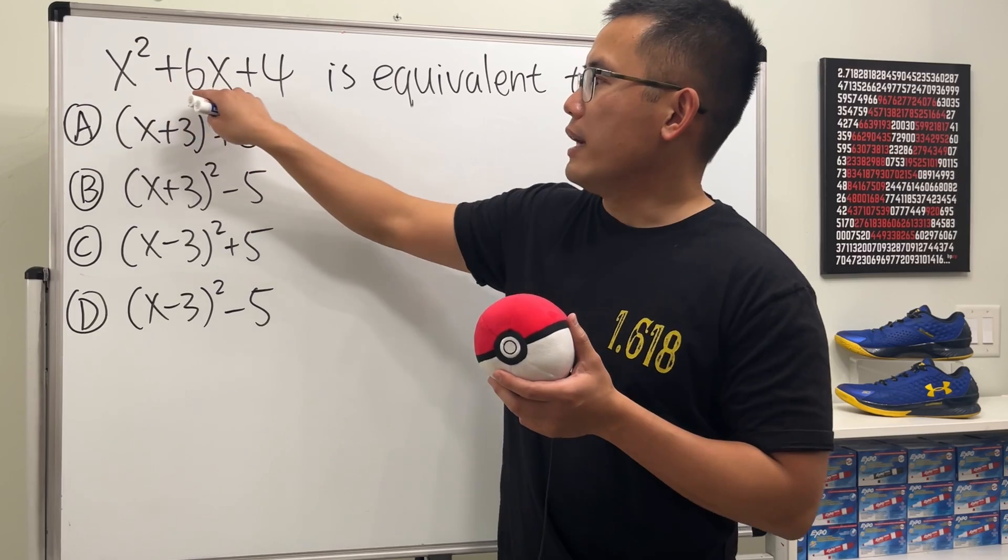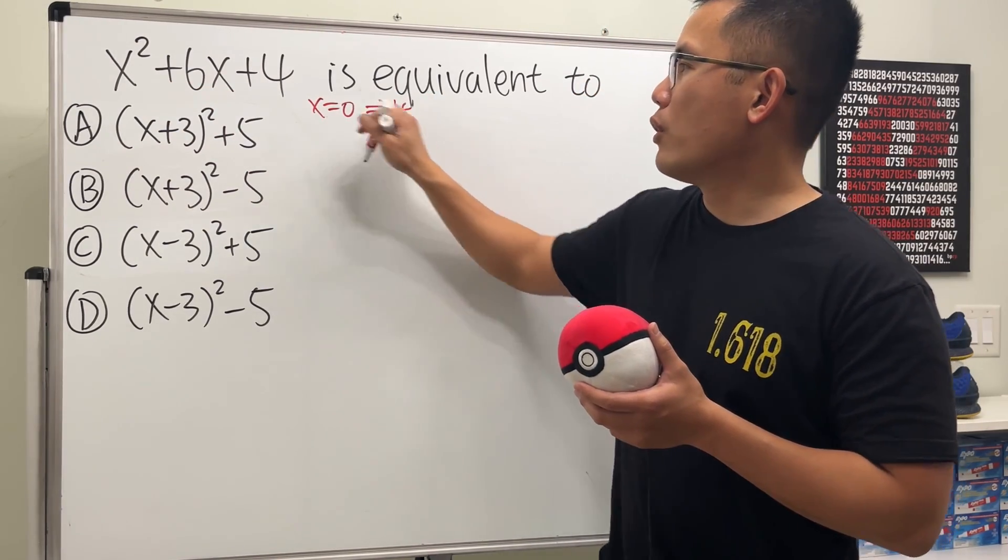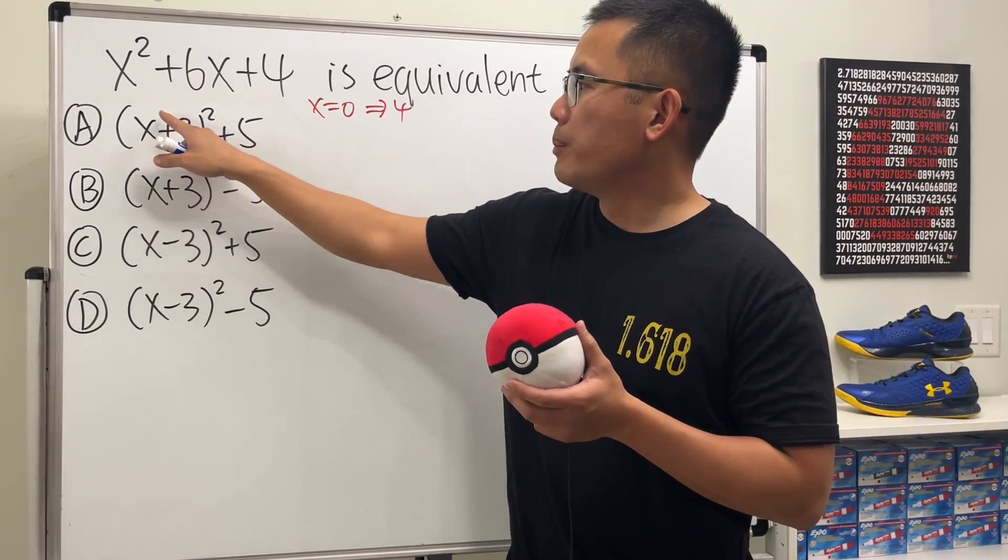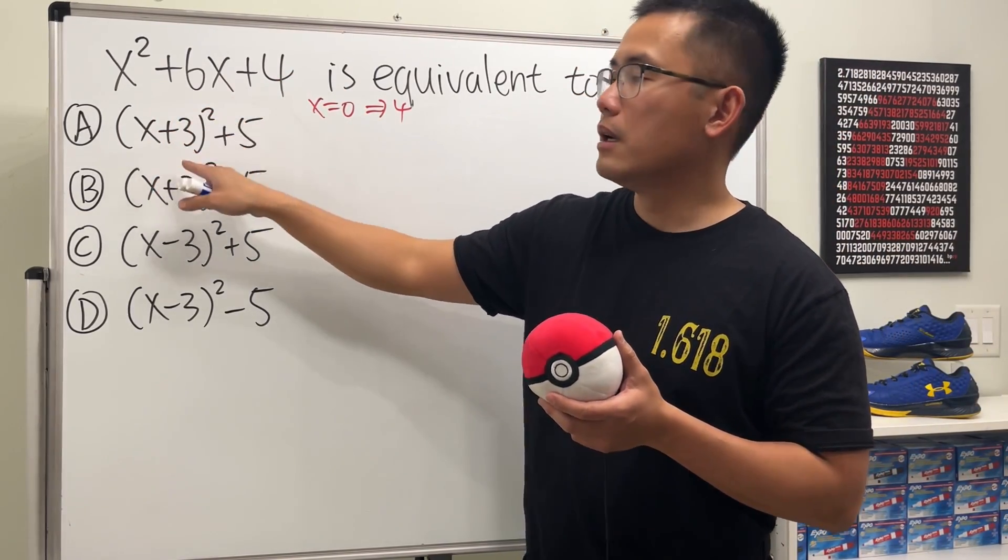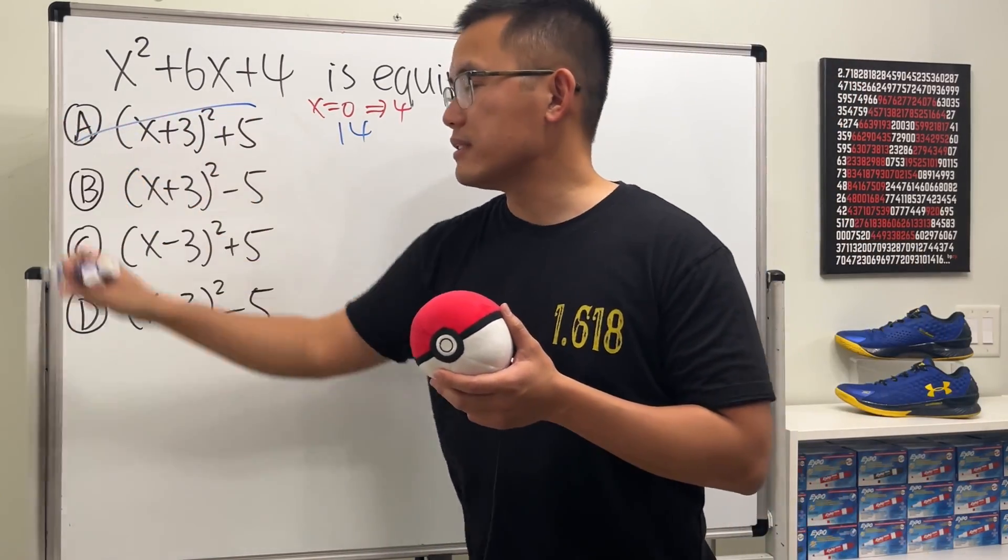Okay, I'm going to use 0 for x. If x is equal to 0, then we should get 4, because this is 0, 0, 4. And now let's plug in 0 into here. That would be 3. 3 squared is 9, plus 5. That would give us 14. That's not 4, so this is not the answer.